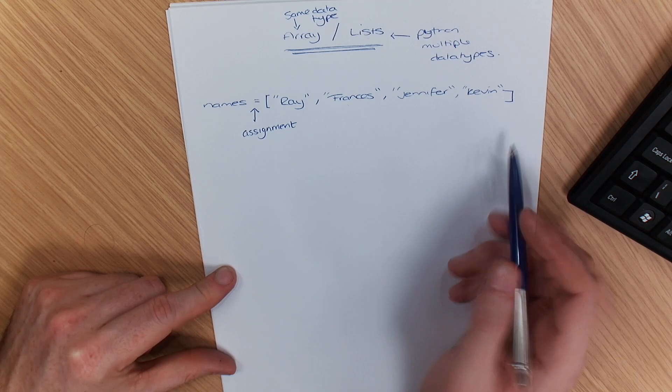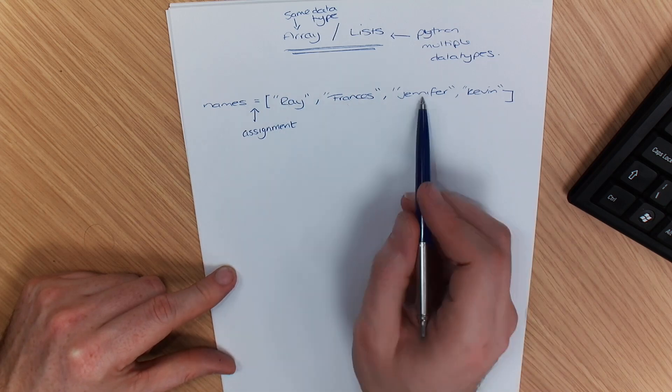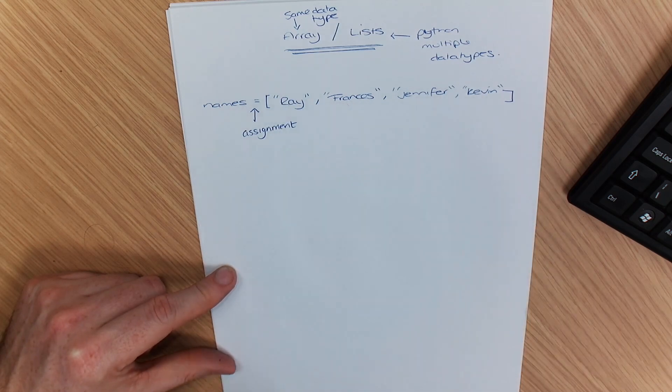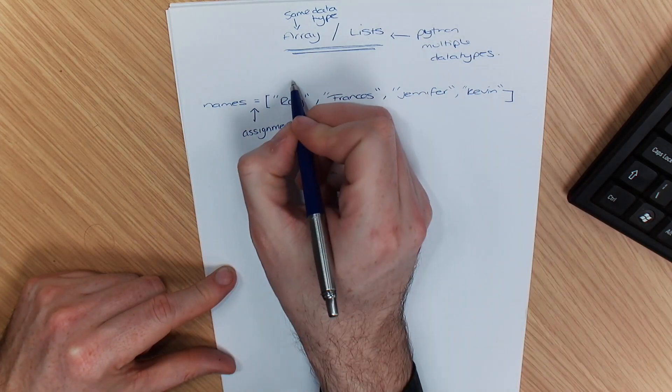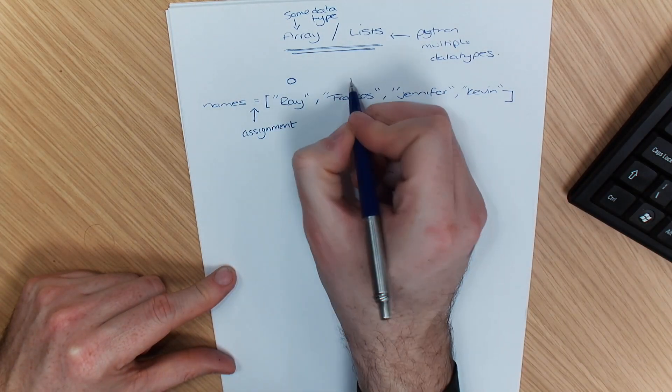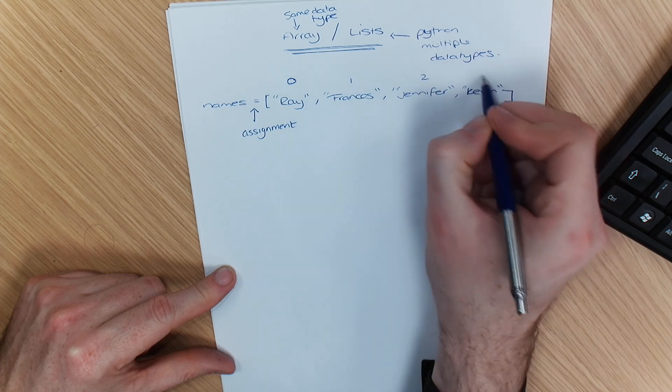Just so you understand it, each item in your array slash list has an index. That would be zero, that would be one, that would be two, that would be three.